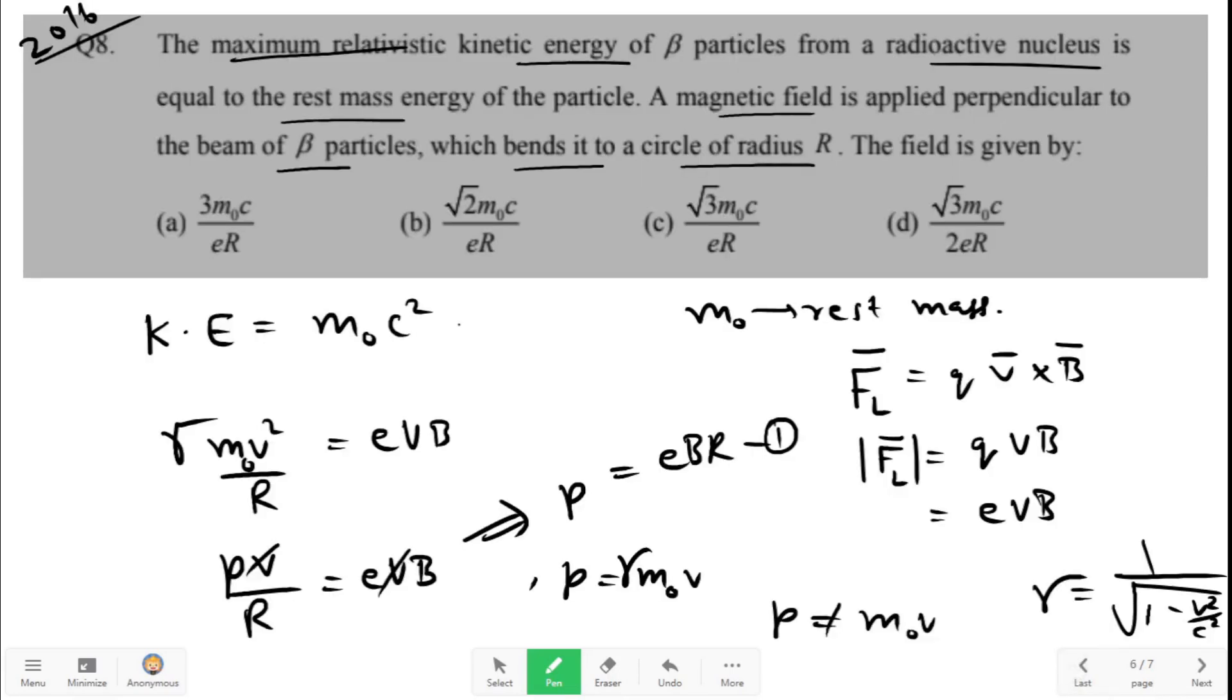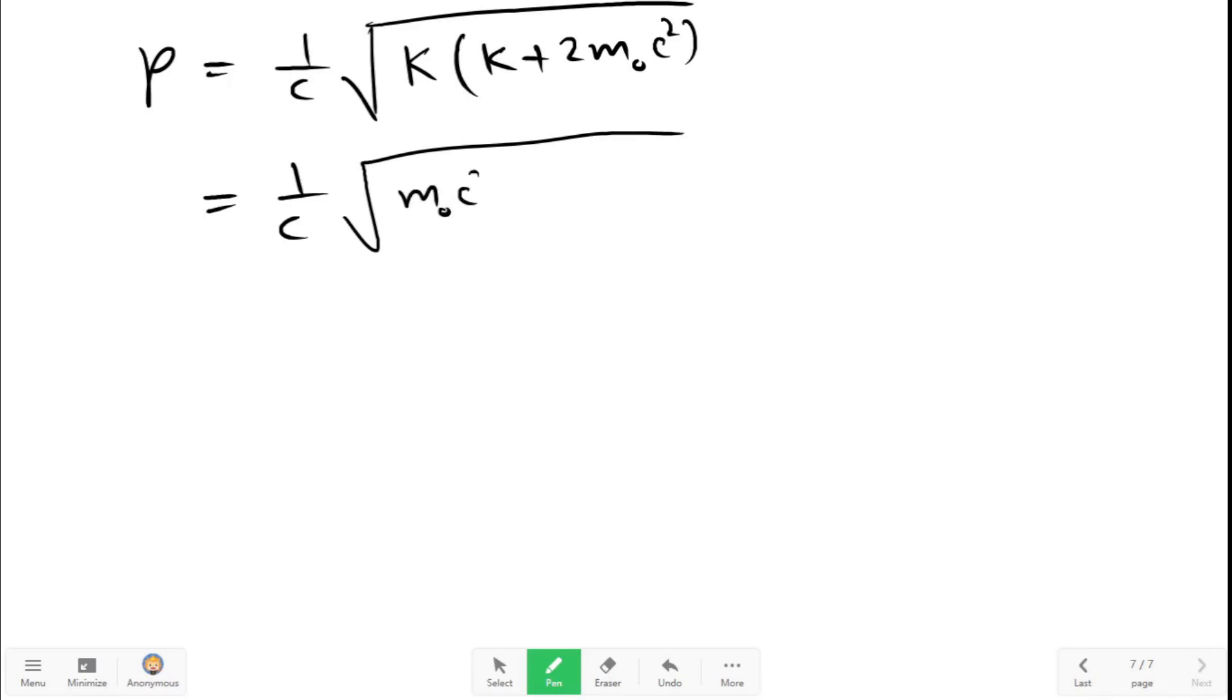This is equal to 1/c times under root K, where kinetic energy K is given to be equal to m₀c². So m₀c² times (m₀c² plus 2m₀c²). This is equal to 1/c times root 3m₀c² which is equal to √3 m₀c.